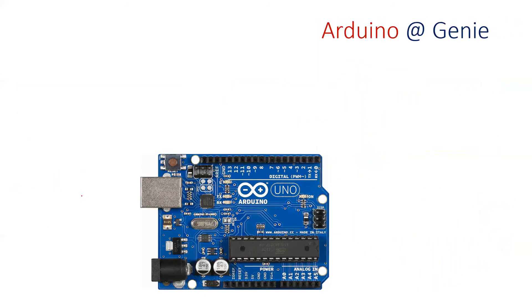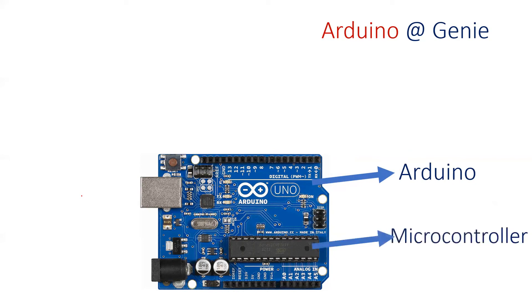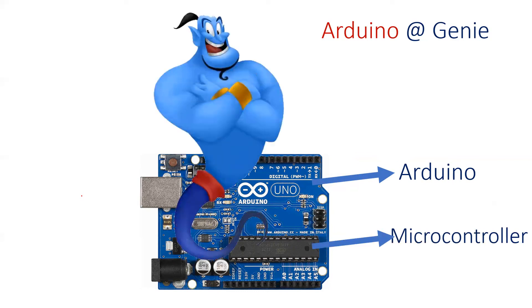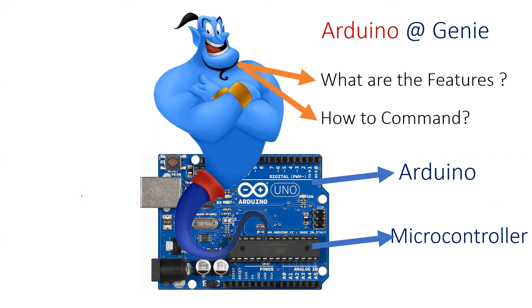In this video we learned what is Arduino — it is an electronic board along with powerful software that lets you build interesting applications. We also learned that Arduino has a microcontroller inside, which is equivalent to the genie of a magic lamp — a very powerful entity that can do lots of work for you. In order to use Arduino, you need to understand its features and learn how to command it. We will see that in the next video. Thank you.